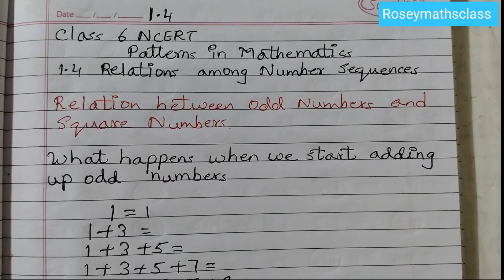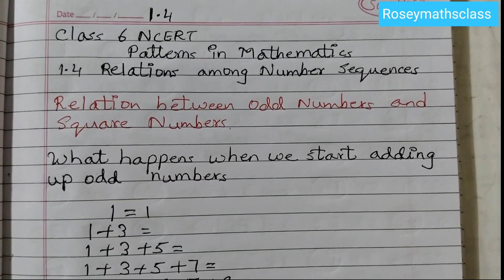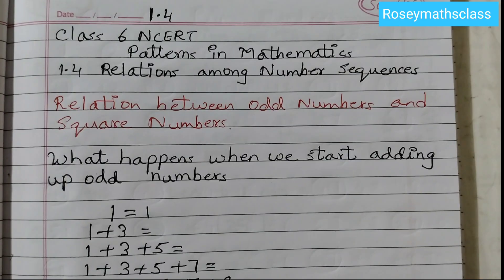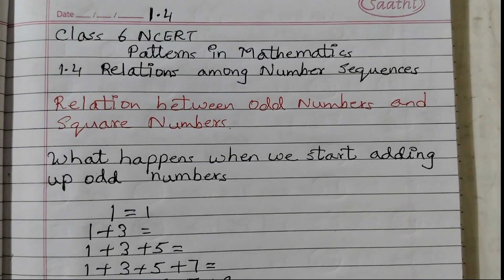Hello students, welcome back to Rosie Mad's class. Today we will be discussing 1.4 relations among number sequences. In this subtopic we are going to relate the different sequences — how the sequences are related. The first one given is the relation between odd numbers, adding up odd numbers and square numbers.